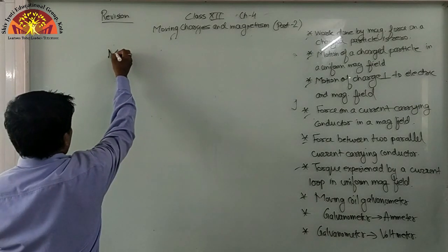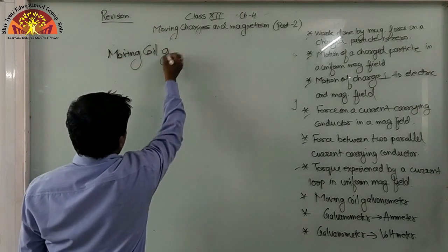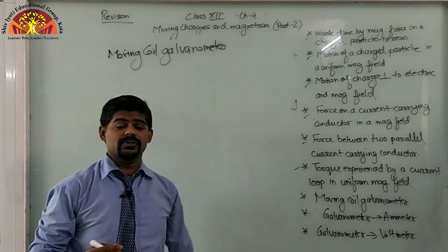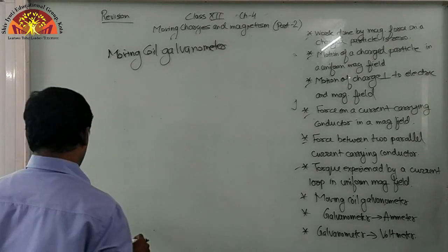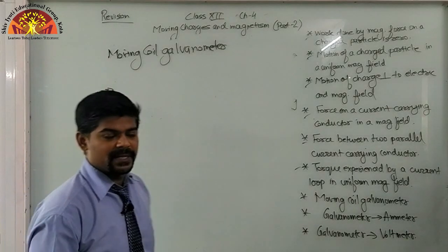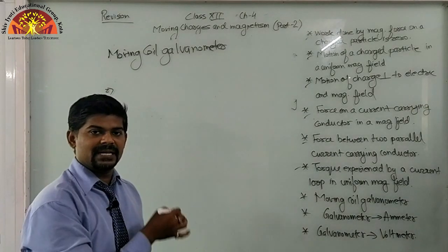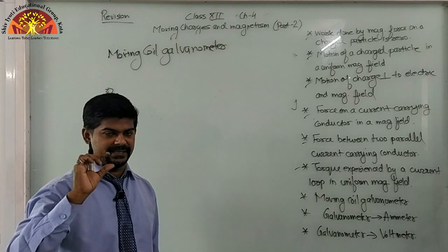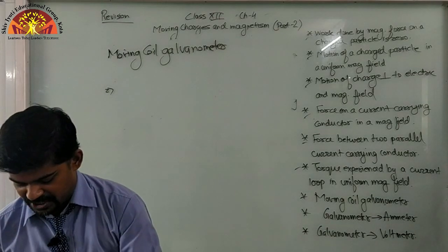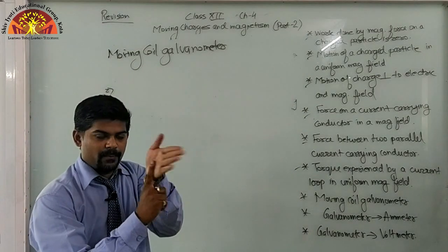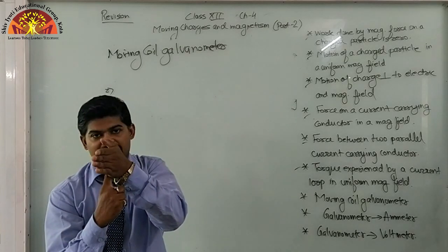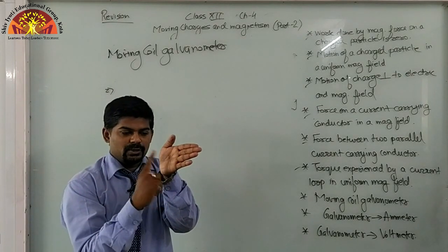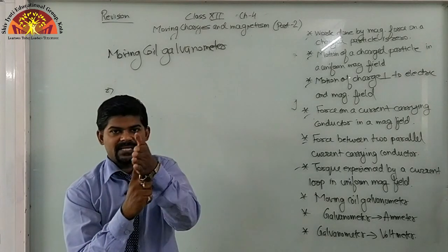The next topic is the moving coil galvanometer — a device used to detect current flow in a circuit and also to find small currents. The principle is the same torque mechanism. When current flows, the coil rotates, but a restoring spring brings it back. As the coil rotates and the spring provides a restoring torque, the pointer deflects to an equilibrium position.